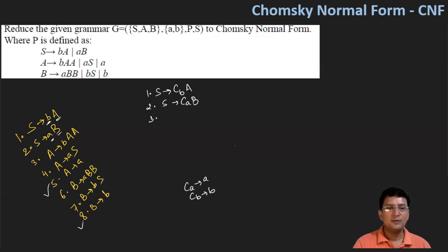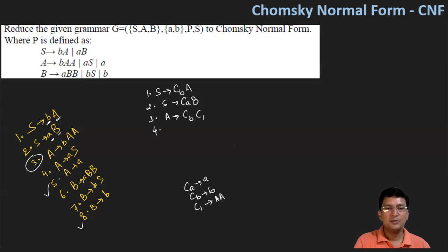For production number 3, A produces small B, capital A, capital A. On the right-hand side there are three symbols, so we need to reduce to two. We say A produces CB and C1, where C1 is a new symbol, and C1 produces capital A, capital A. For production number 4, A produces small A, capital S, which we can change easily to CA and capital S. Production number 5 is already in Chomsky Normal Form, as the right-hand side is a single terminal symbol.